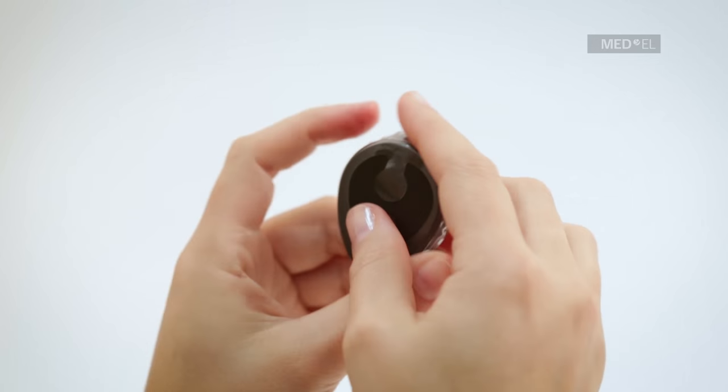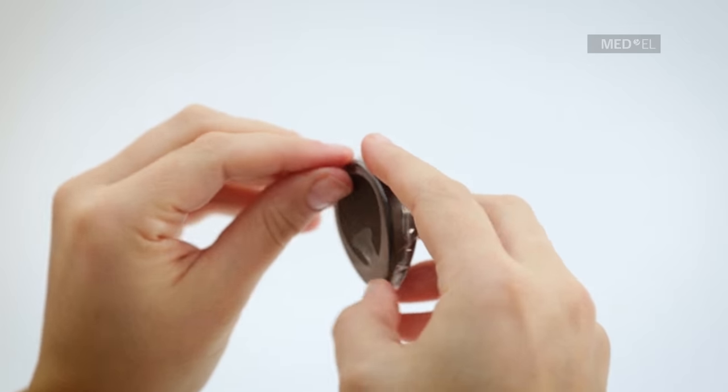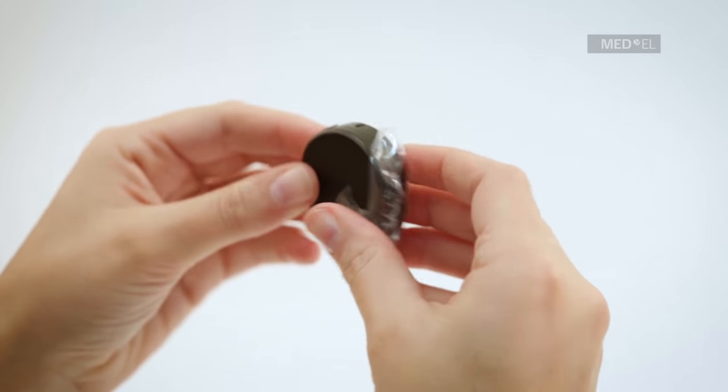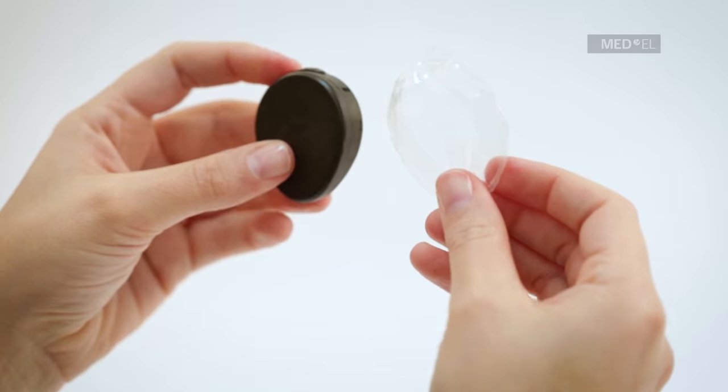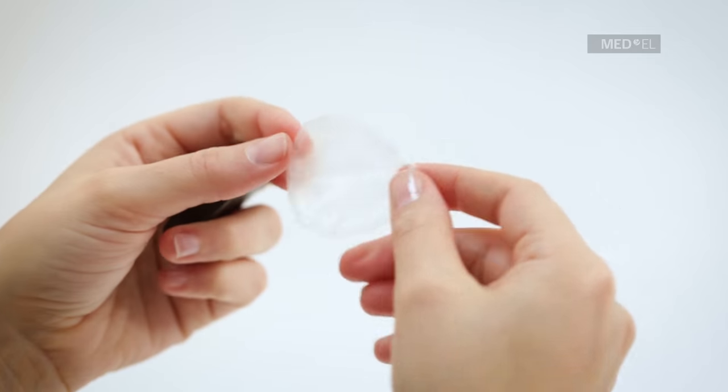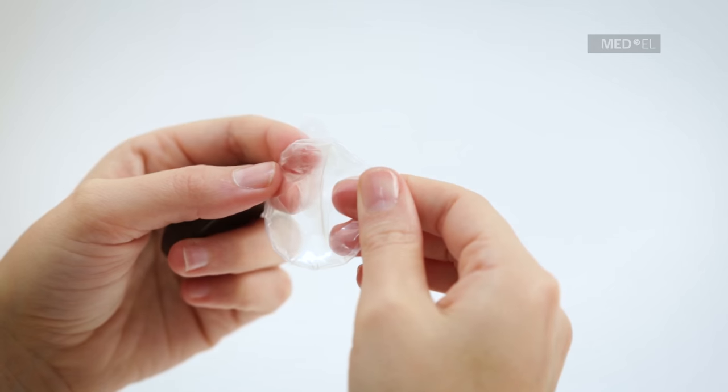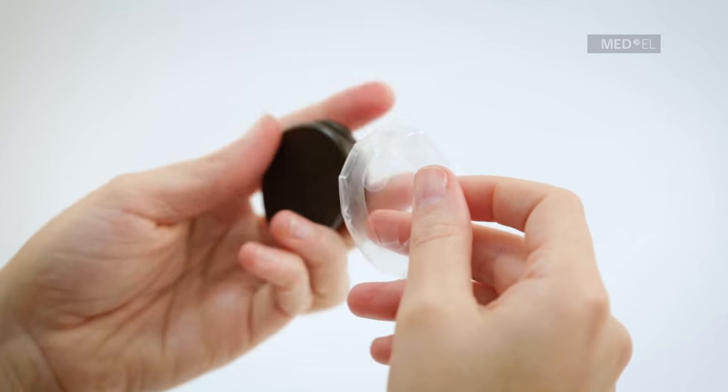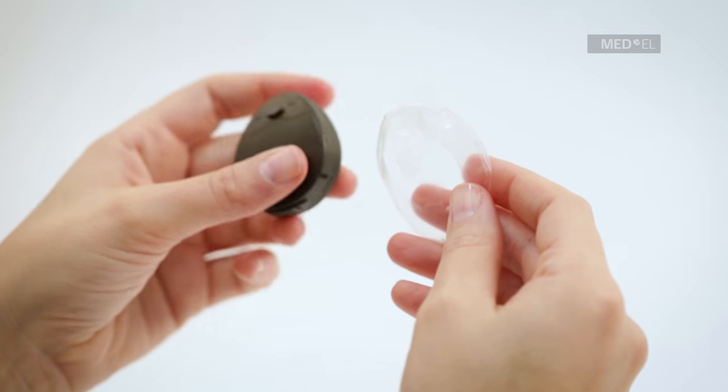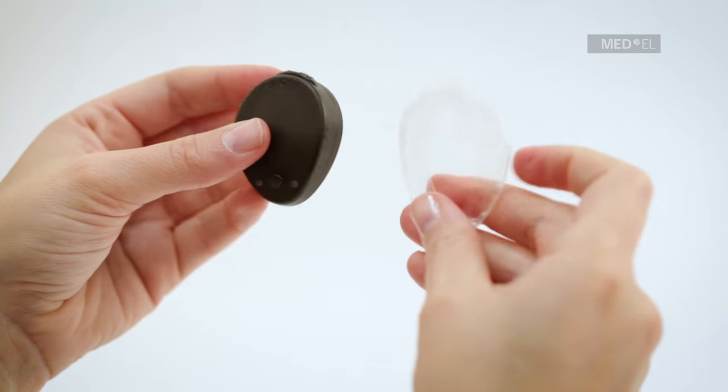Pull waterware gently off of Rondo and make sure that you do not damage waterware. Waterware can be used up to three times, but the adhesive strip needs to be replaced each time. Follow the previous instructions and ensure that there is a complete seal with the adhesive and waterware before reusing.